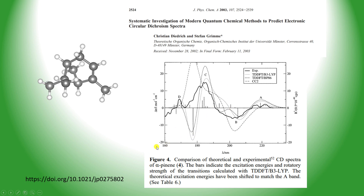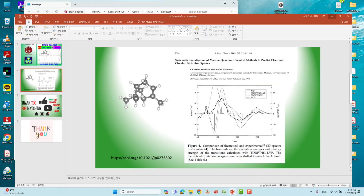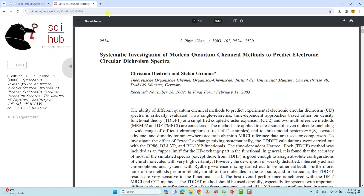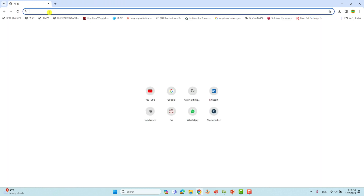If you want to see this paper, just visit this DOI number and you will get this paper — you can compare yourself. Before doing the ECD spectra, we have to get the 3D structures of alpha-pinene. We can also get the R-alpha-pinene or S-alpha-pinene. I will tell you where to get these two structures to do the ECD spectra calculations.